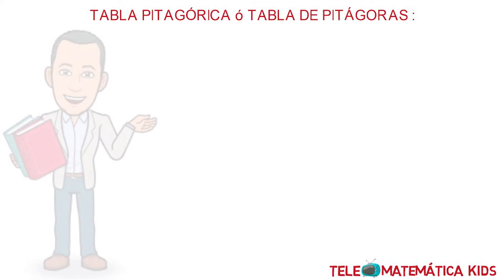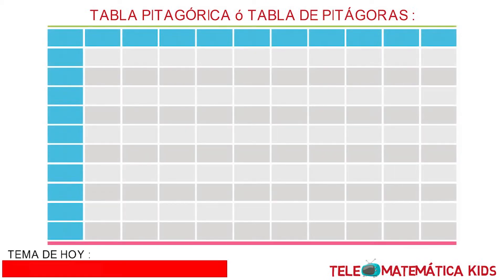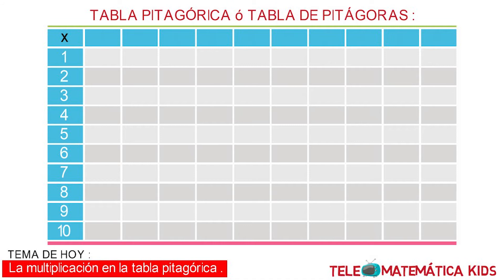Next, we will show the table and how the values are obtained so that you can understand the multiplication process. We have the operation that will be done where in the first column and the first row you find the numbers from 1 to 10.